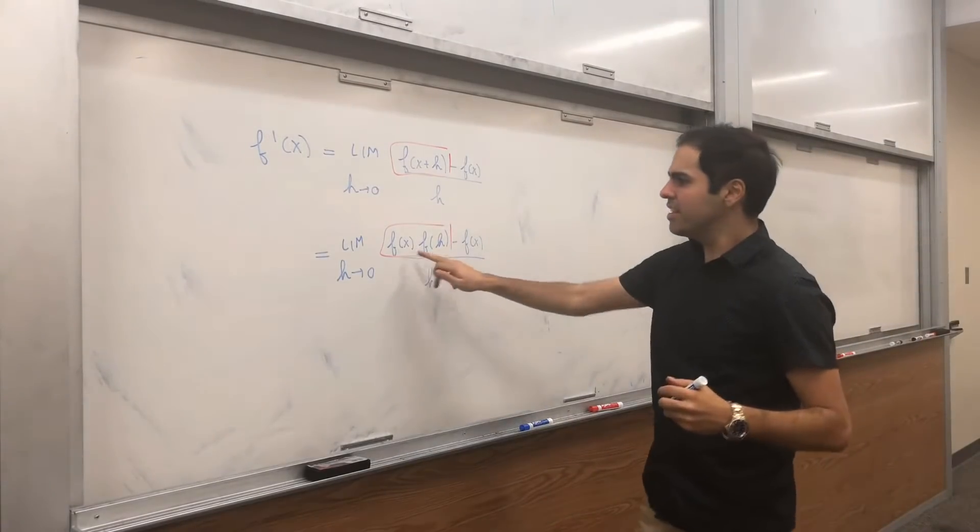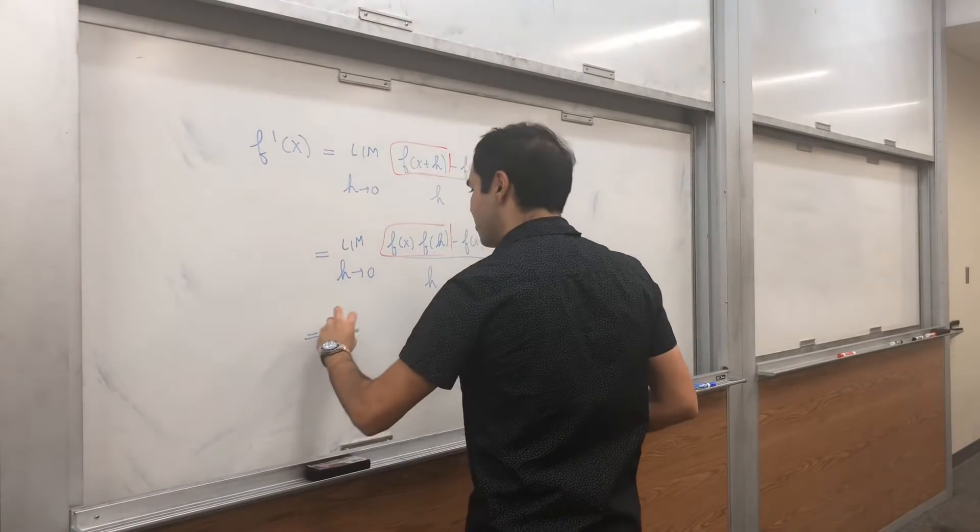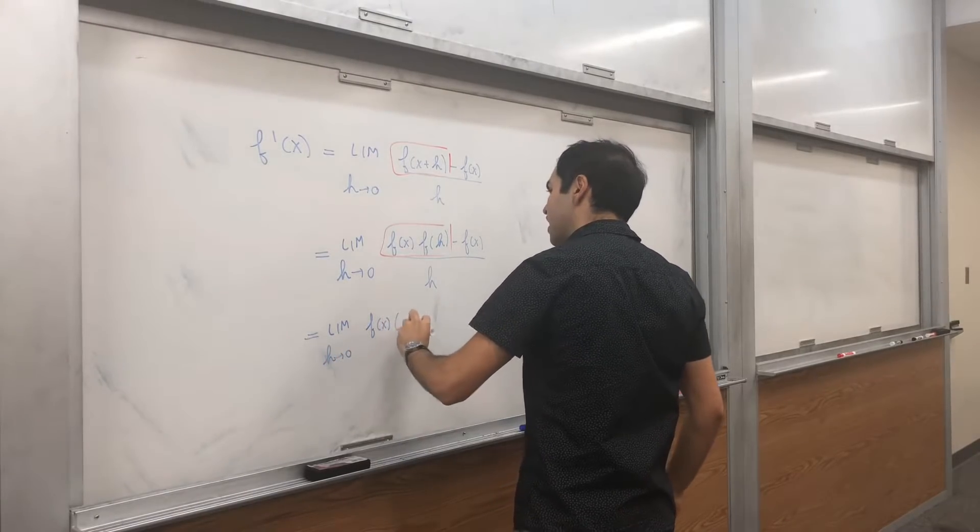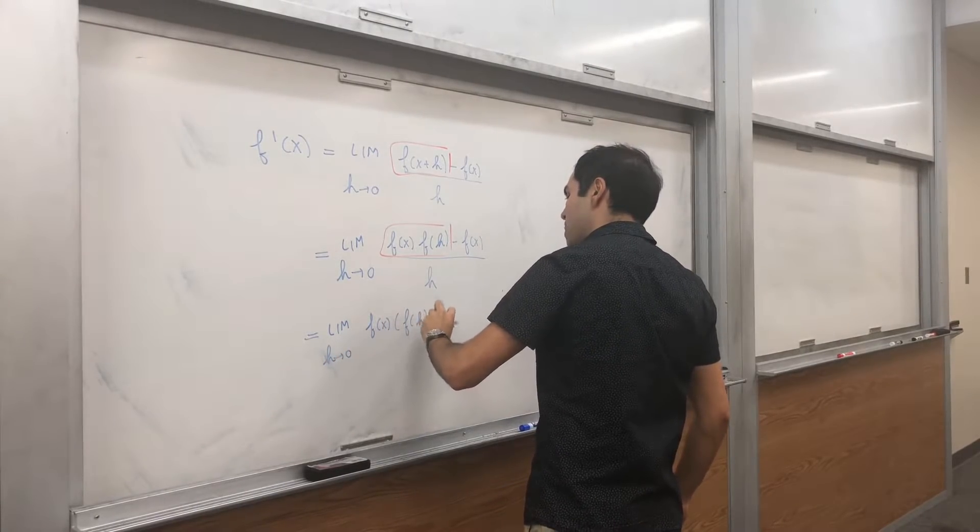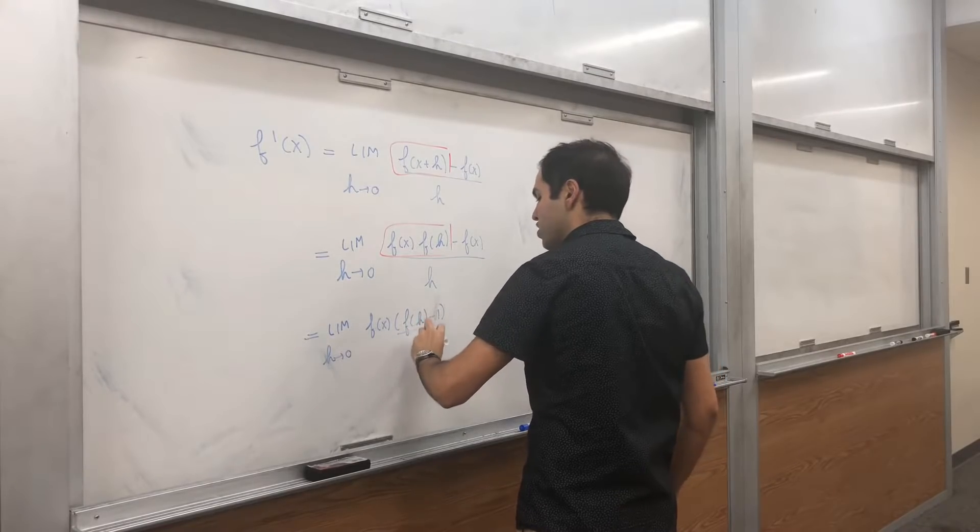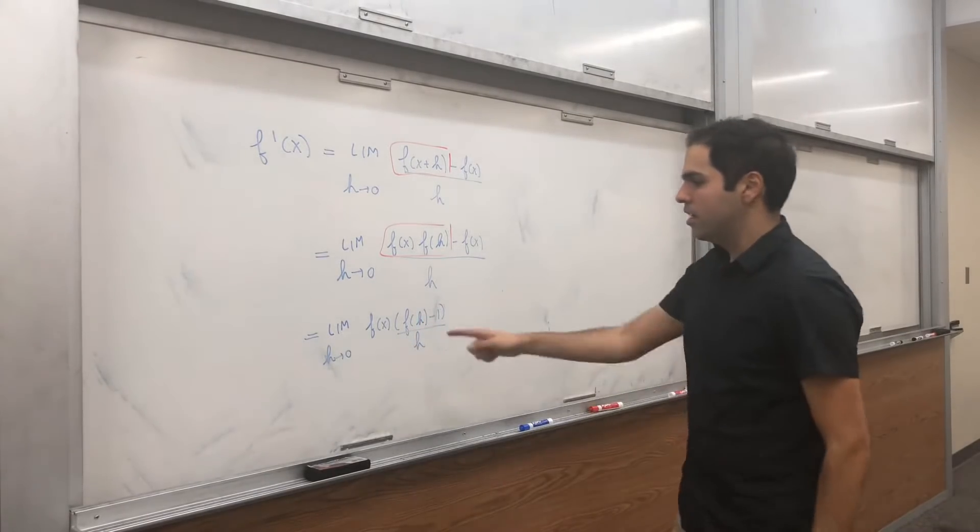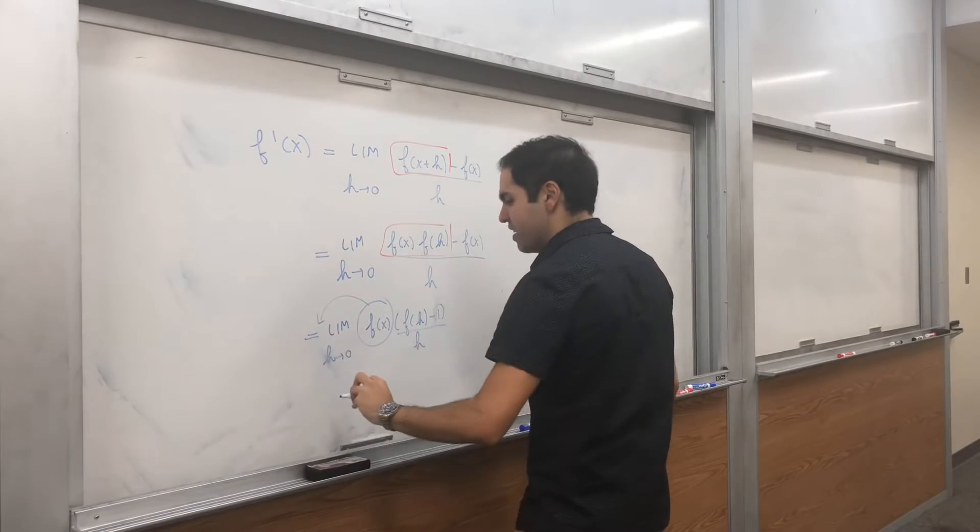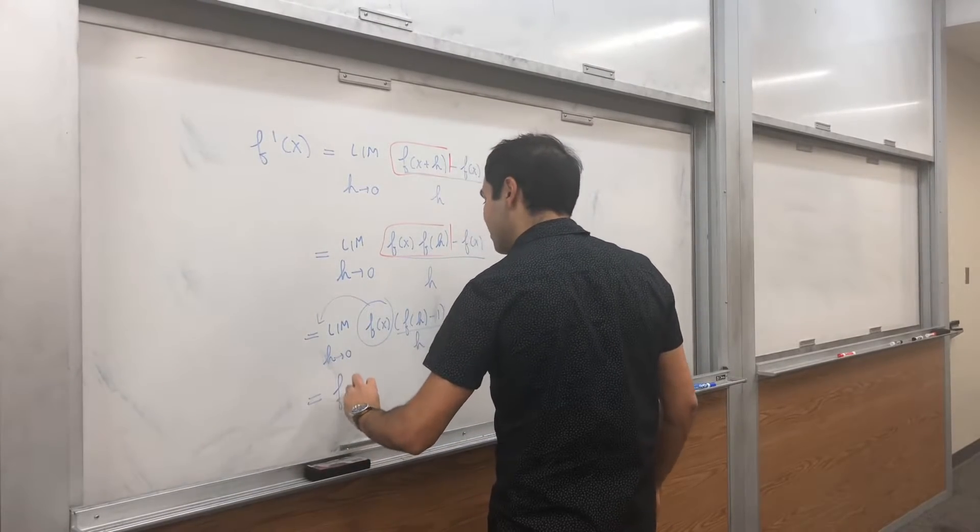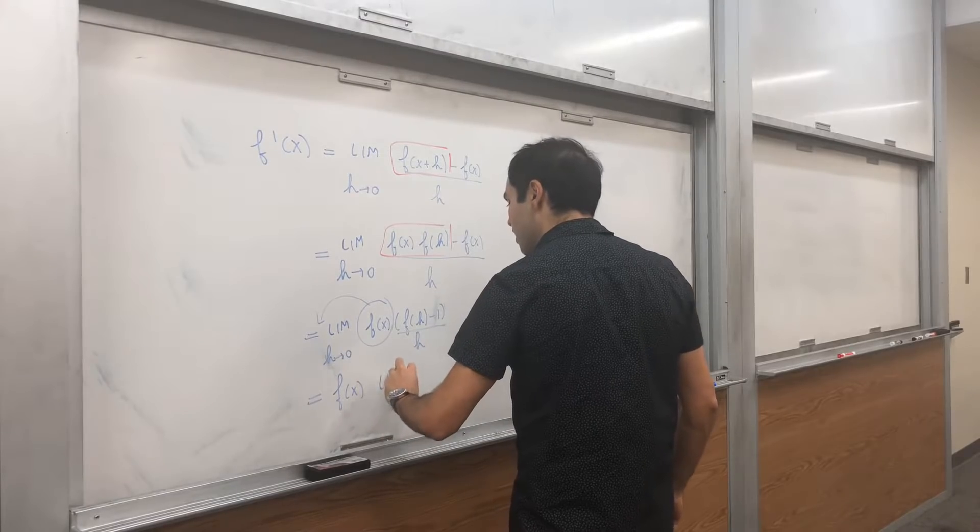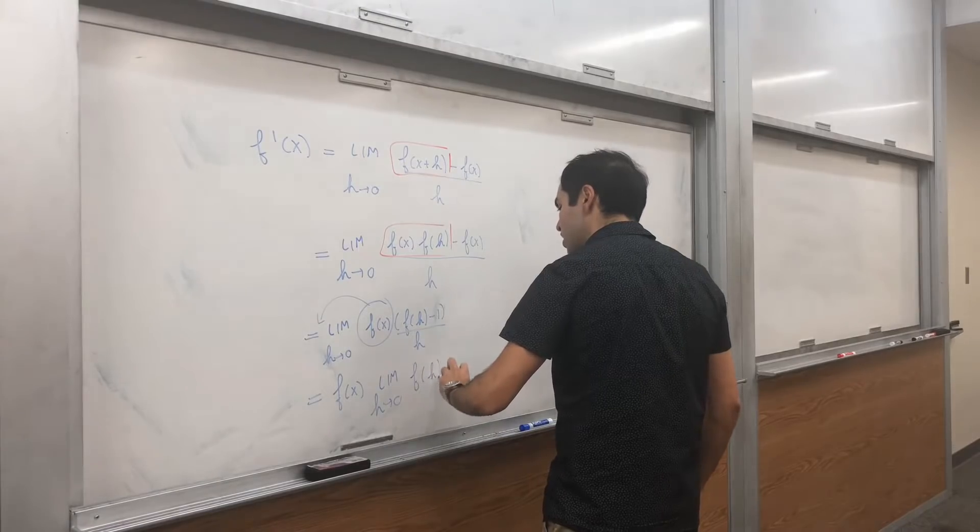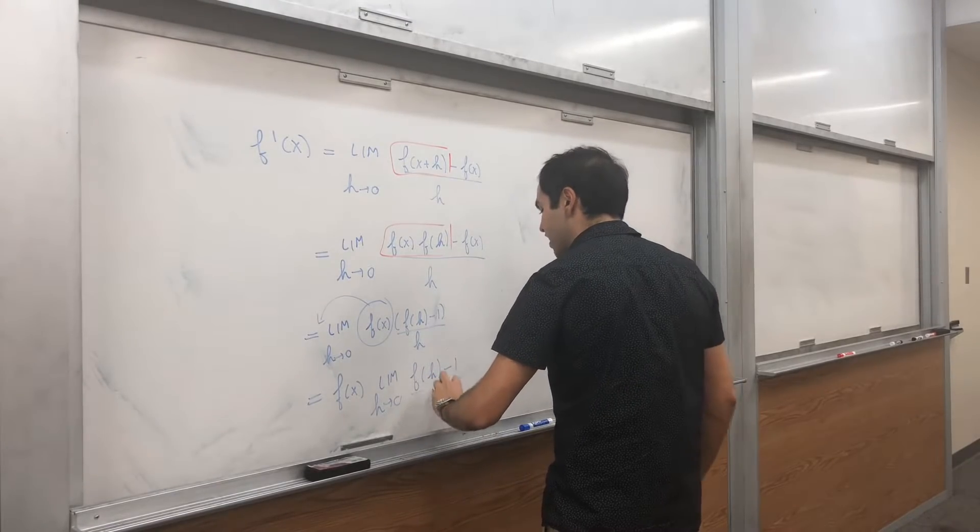And now notice this f of x, well you can factor it out, so limit h goes to 0, f of x times f of h minus 1 over h. And then this f of x comes out, and we get f of x, and then limit h goes to 0 of f of h minus 1 over h.